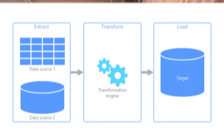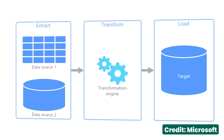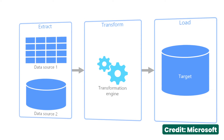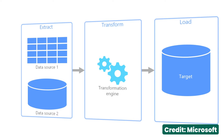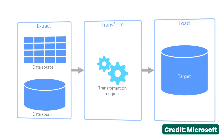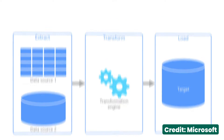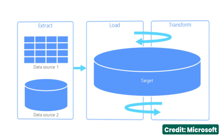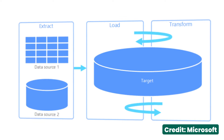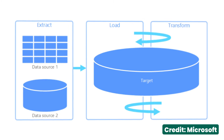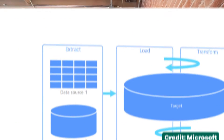ETL describes the process of bringing data from all these disparate data sources into the data warehouse. It stands for extract, transform, and load. A more modern approach over the last five to seven years has been extract, load, and transform — or ELT — but the real intent is the same: bringing data into the data warehouse so that you can query it there.